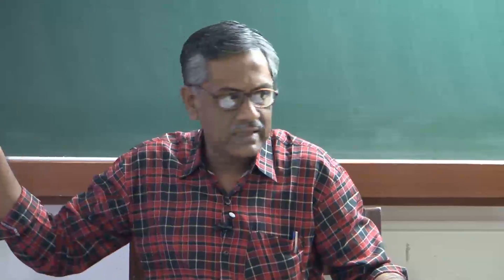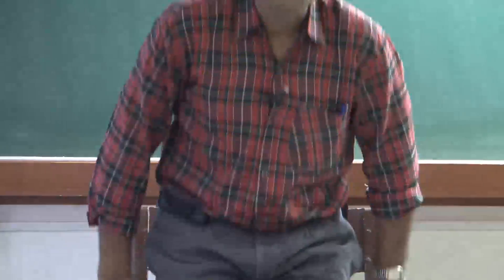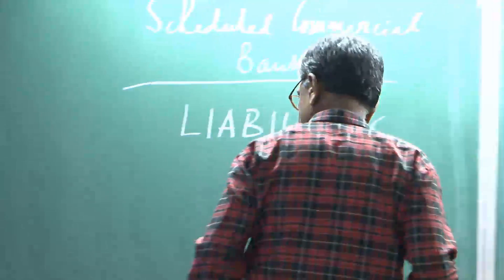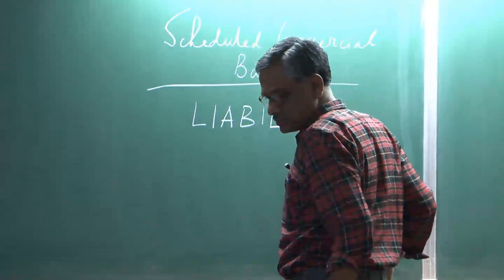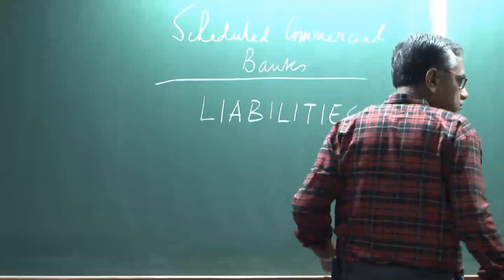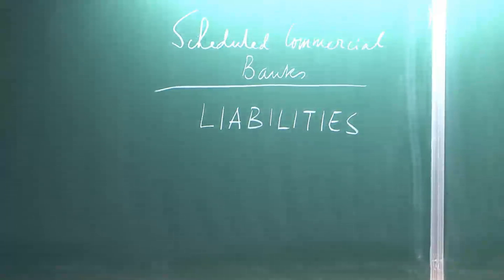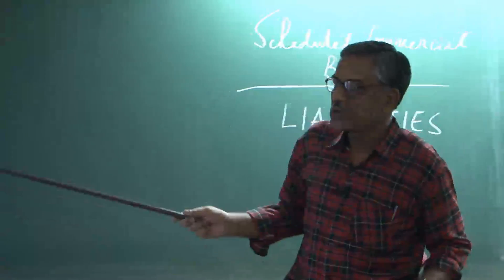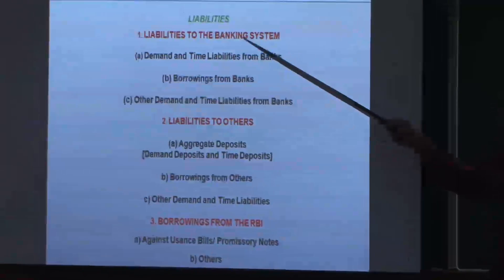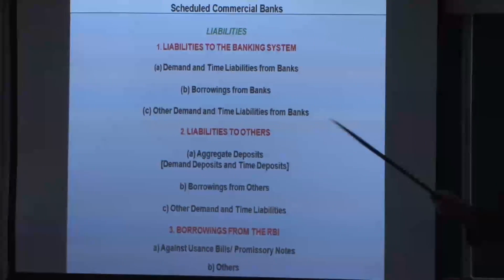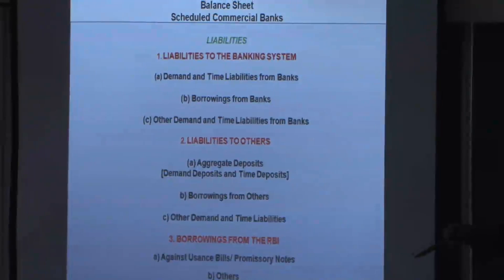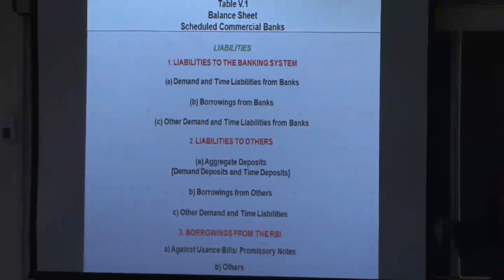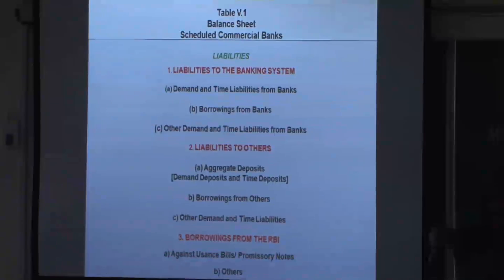What you notice in the liabilities — and this is very important — is that there are three groups of items. One is liabilities to the banking system. You know that banks keep other banks' money, which creates a liability, and the flip side of that liability will be an asset on the other side.